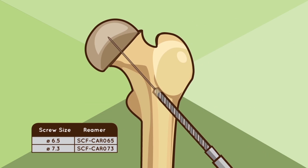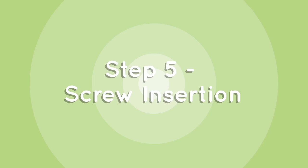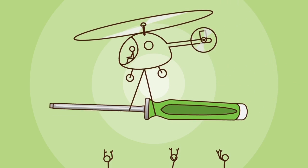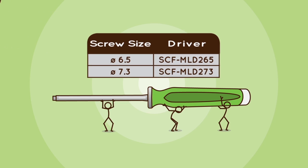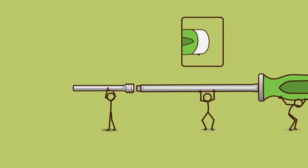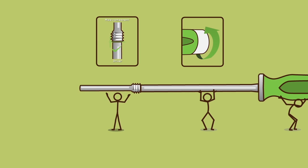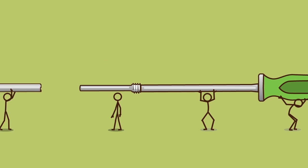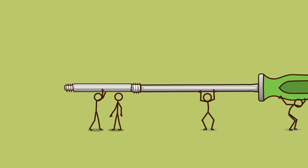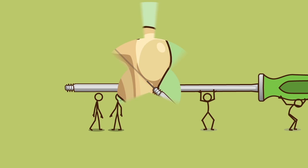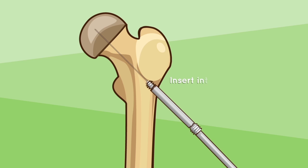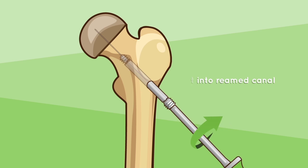Step 5, Screw Insertion: Using the adequate driver, turn the locking knob until the male component is fully engaged onto the driver. There should be no space between the screw head and the driver when properly assembled. To complete the screw assembly, simply slide the female component onto the male component. The assembled screw is inserted into the reamed canal over the guide wire as would be a standard one-piece screw.